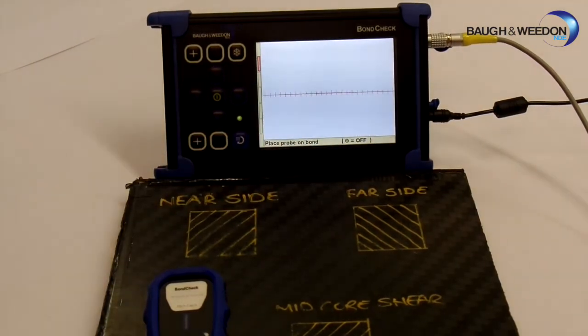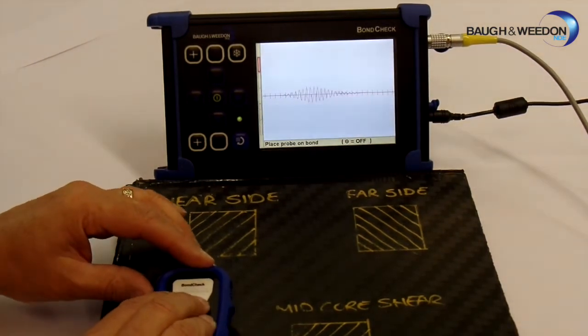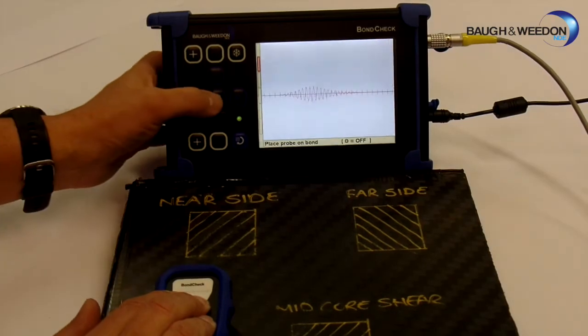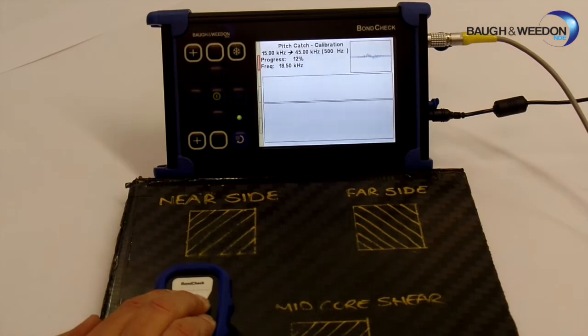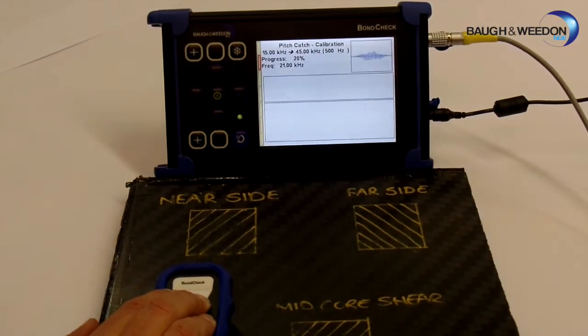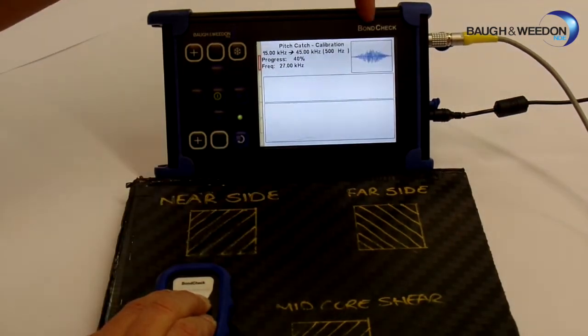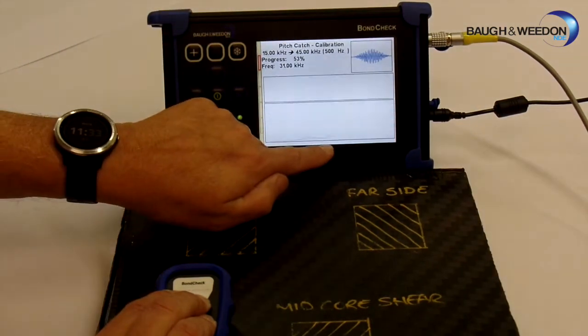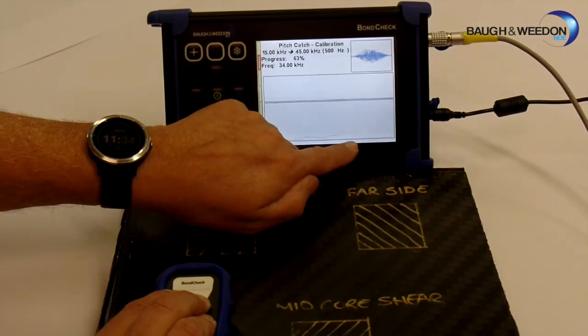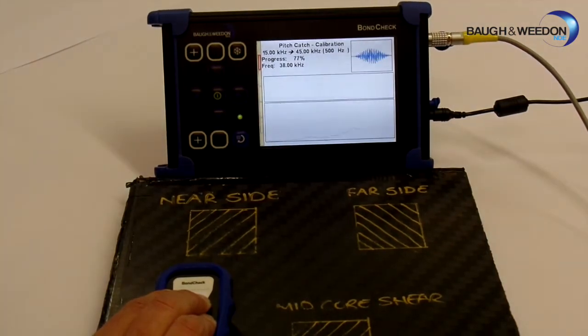And what it says down here is place probe on bond. What that means is place the probe on a bonded area, so on the test piece. So we know this area is bonded, so we position it, put it down, press the green button, and it will now ramp through the frequencies that we have selected. Instantaneous frequency response there, and this is the amplitude slowly crawling across the screen as it goes through each of the different frequencies that we have selected.